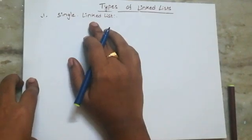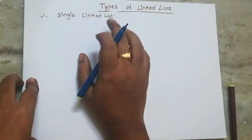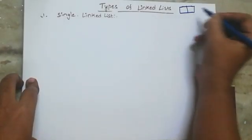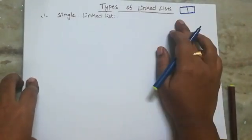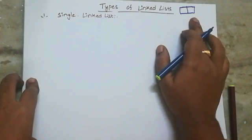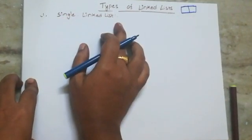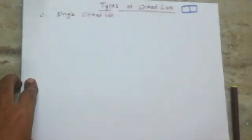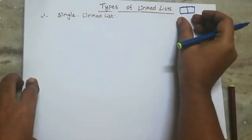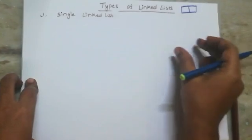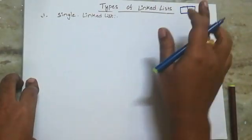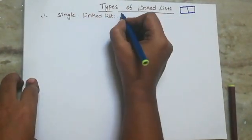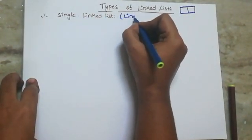First one: single linked list. A linked list is a collection of nodes. Every node is divided into two parts. The first part is data and the second part is address. Single linked list is carrying only one address. So this is the linear linked list.